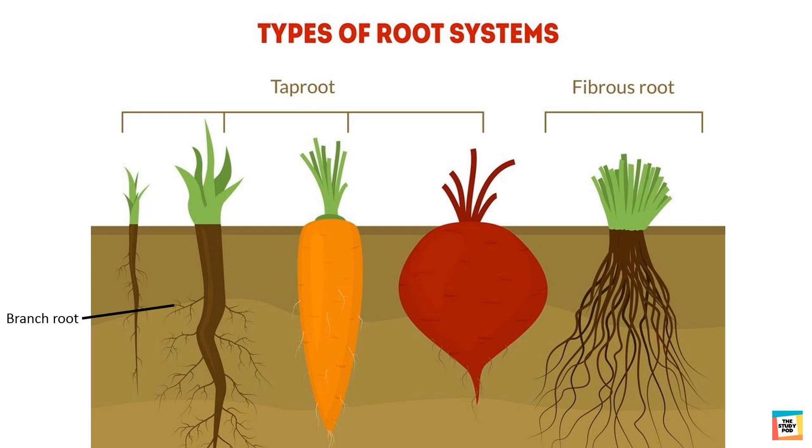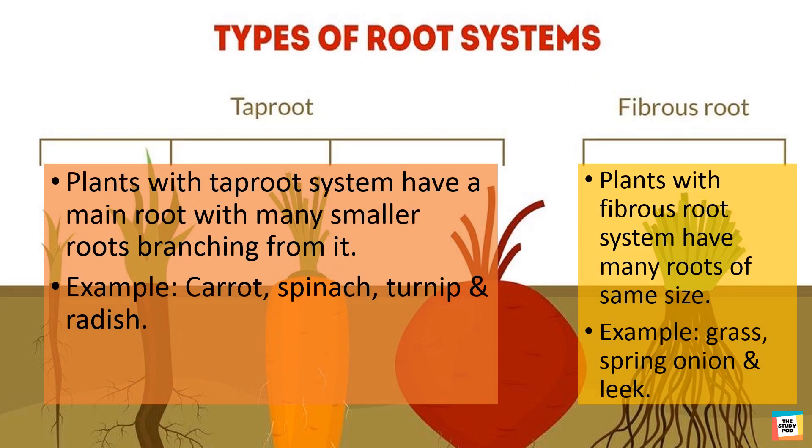Other plants, like grasses, have fibrous root system that is made up of many roots about the same size. Have a look at their differences.